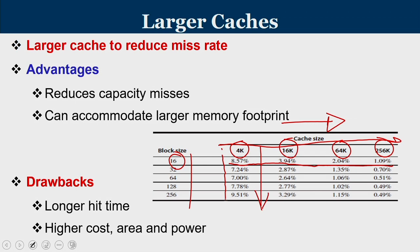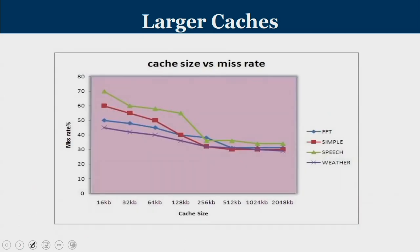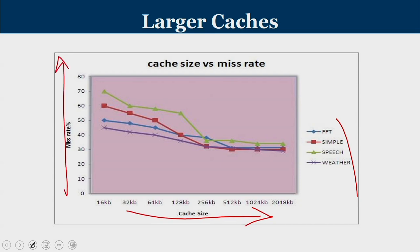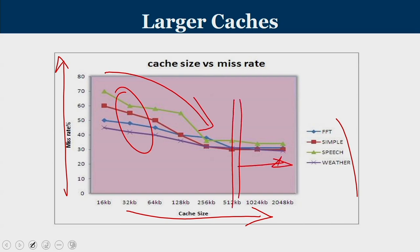Larger cache will help in some way, but at the expense of longer hit time — because the bigger the cache, the more set indices it has, taking more time to decode and reach the corresponding set, and naturally more floor area, higher cost, area, and power. For applications like FFT, speech processing, and weather prediction, increasing cache size shows a dip in miss rate, but beyond a point the miss rate does not come down further, because every application will surely have compulsory misses — even in an infinite cache.